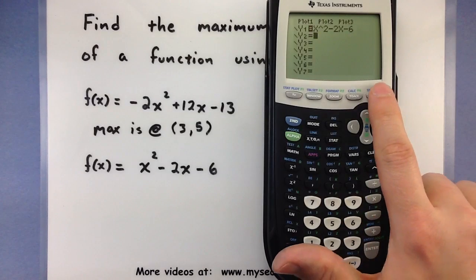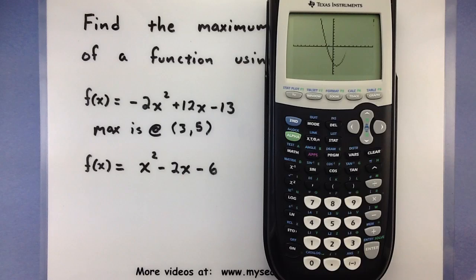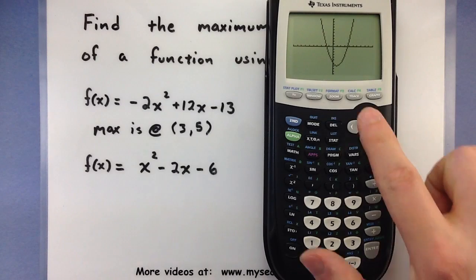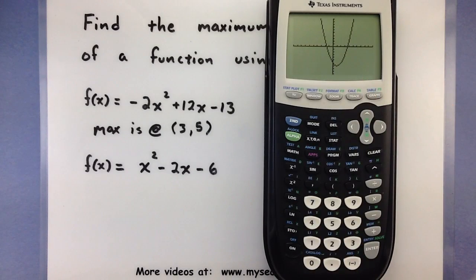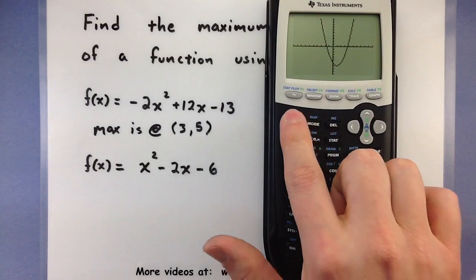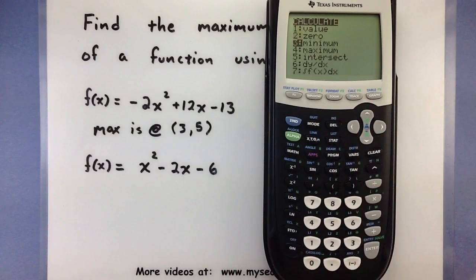Again, we'll check out our graph screen. There's our parabola, so it looks like it definitely has a minimum, maybe somewhere around 1. So second calc to bring up that menu, select number 3 to find the minimum.